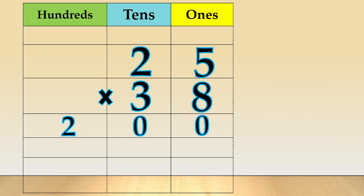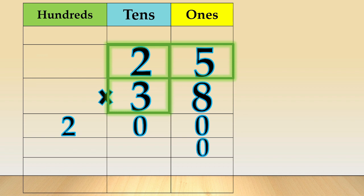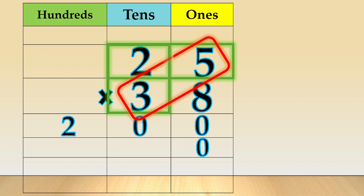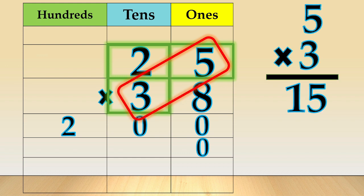Next, we multiply 25 times 3. Put a 0 to hold the ones place. That's because 3 is not really a 3 — it's a 30. So, by adding that 0, we can keep its value. Next, we multiply 5 times 3 is equal to 15. We write 5 and carry 1 to the tens column.